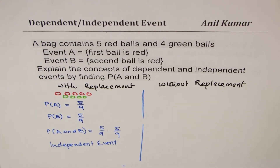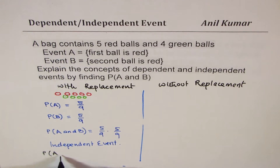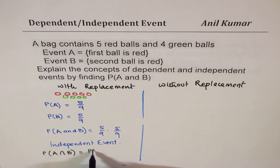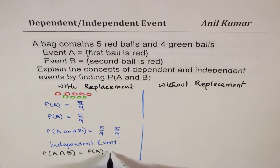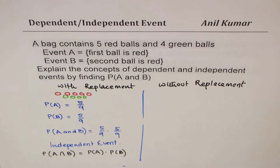In an independent event, the probability of event A and B is equal to the probability of A times the probability of B.